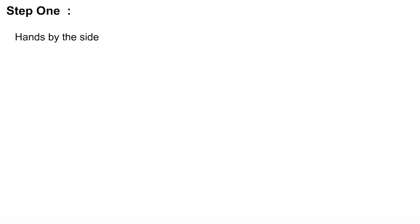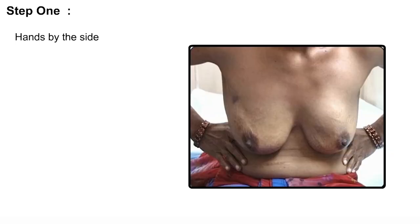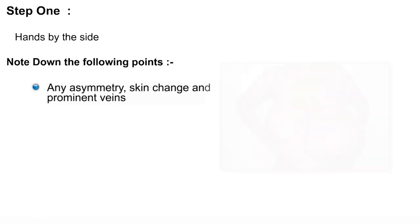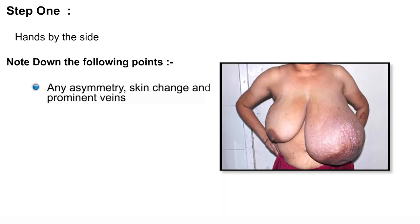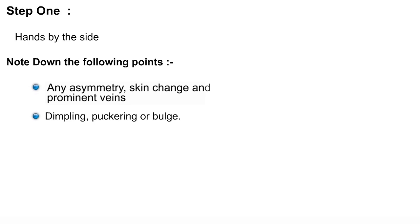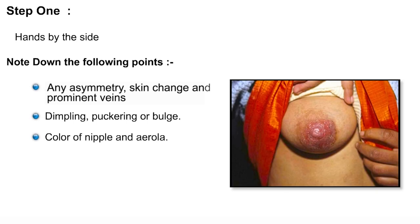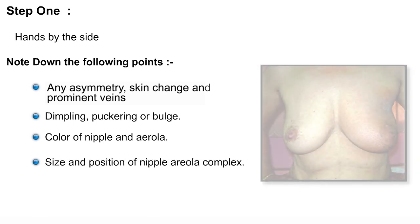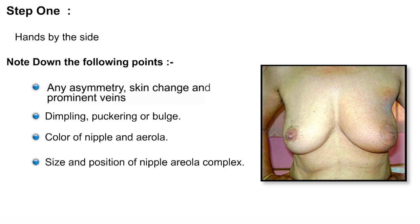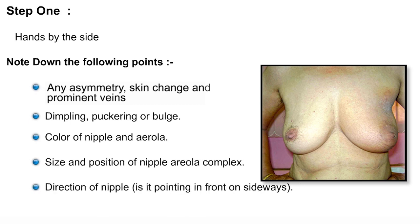During inspection, we examine her first in the sitting position with her hands on the side of the hip bone. Note down any asymmetry between the shape and size, any skin change such as color change, ulceration, prominent veins or vessels, any puckering, dimpling, or any bulge on the breast. The color of the nipple and areola should be recorded, as well as the size, position, and direction of the nipple-areola complex on both sides.